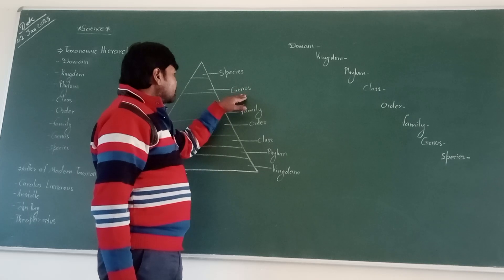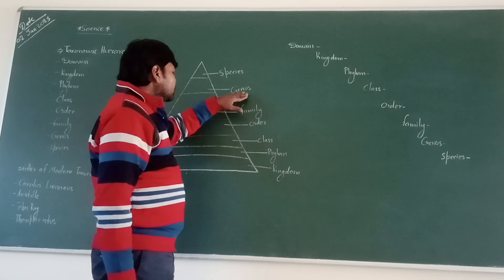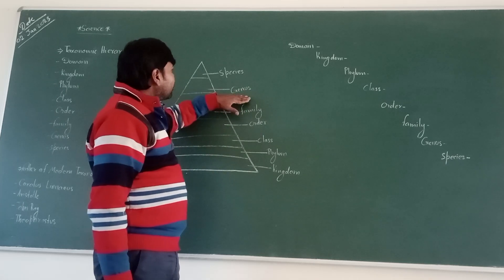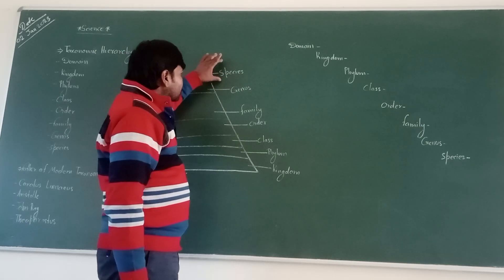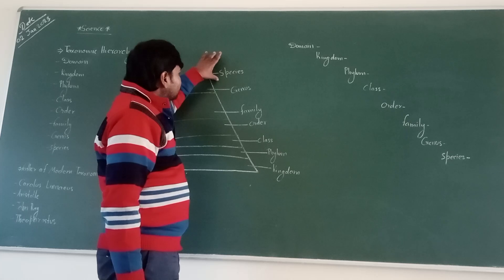Next, genus. Genus is the special features that the universe and plants are classified. Next, species. Species is the special quantity that the universe and plants are classified.